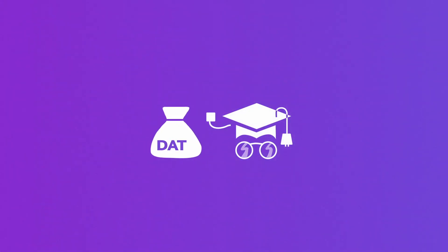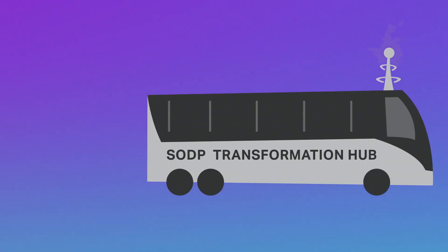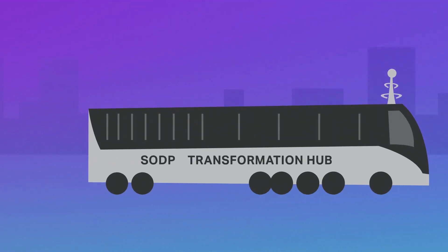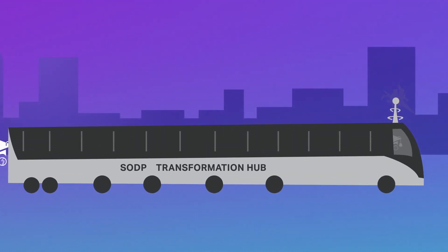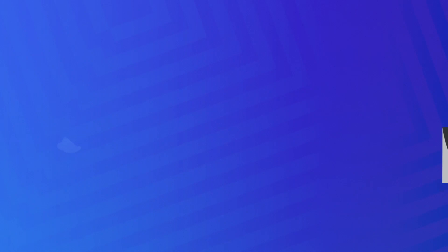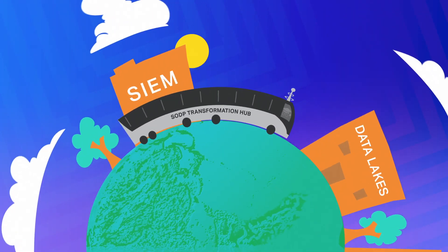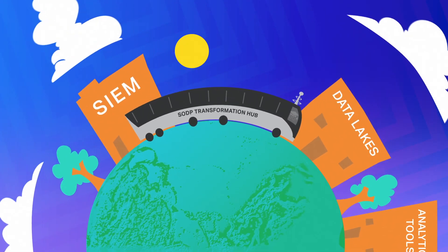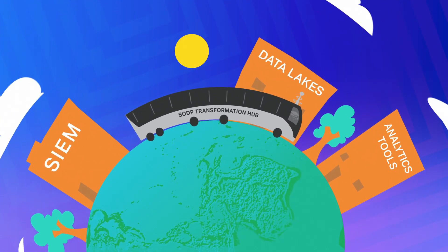This cleaned up and enriched data is transformed into the CEF standard so that it's instantly consumable by your different analysis tools, then sent to the SODP transformation hub — a massively scalable message bus that can transform data from all your different sources and seamlessly distribute it to your SIEM, data lakes, analytics tools, and more.